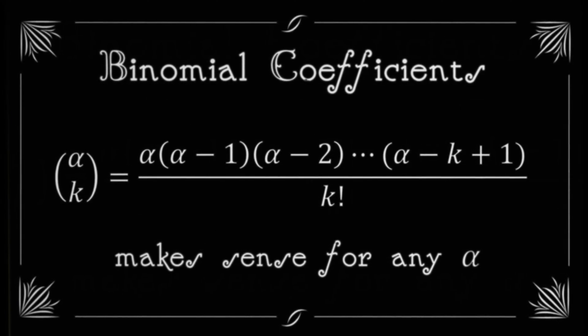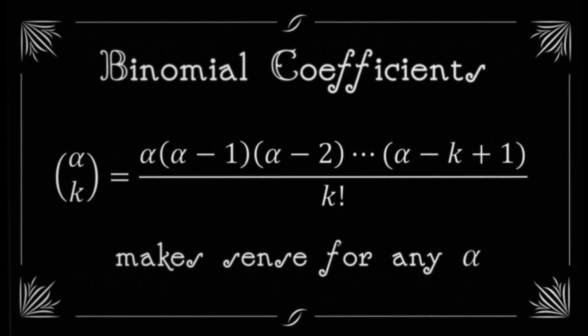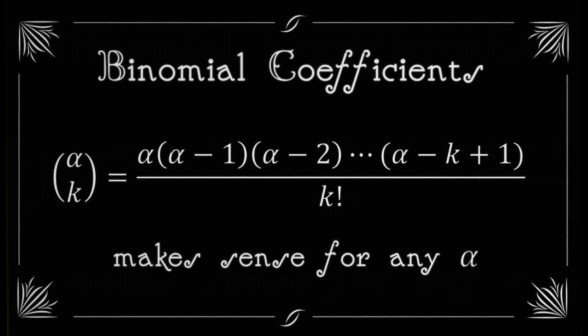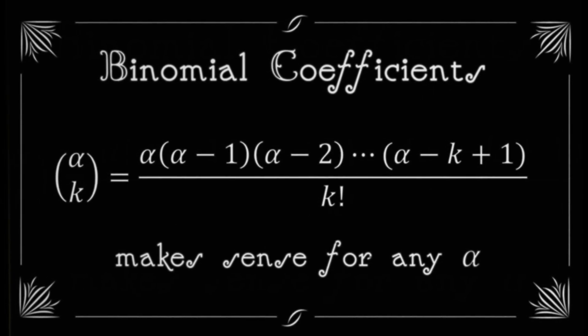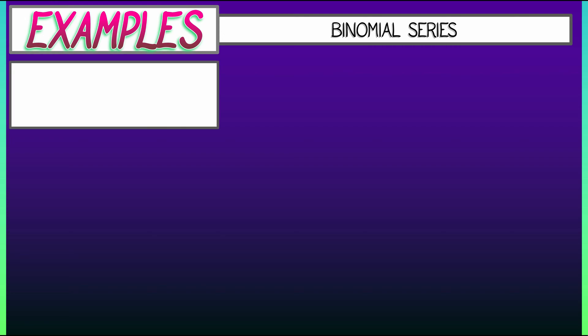Divide all that by k factorial. Now, you may have seen this for alpha being a natural number, but the cool thing is that this makes sense for any value of alpha, and that's how we're going to use it in the binomial series.